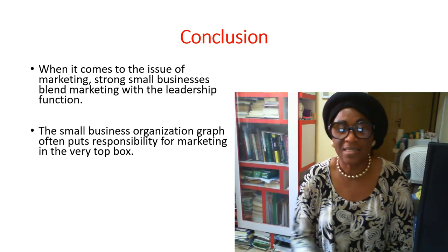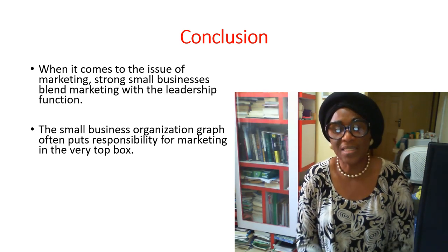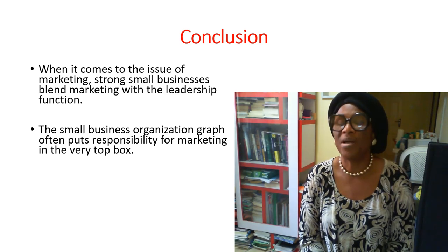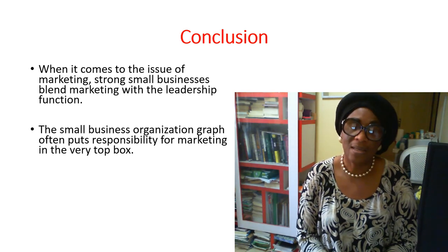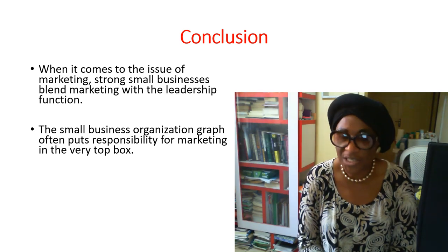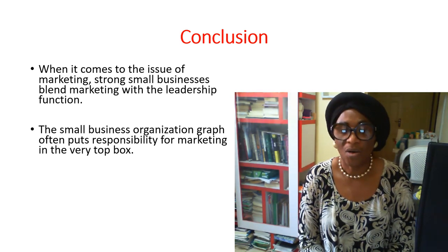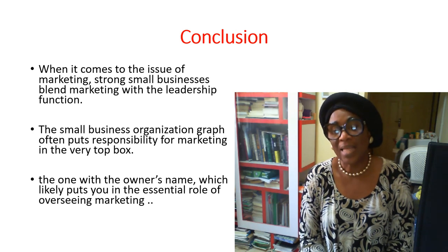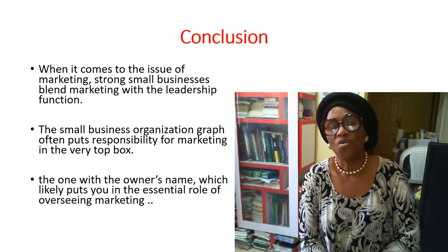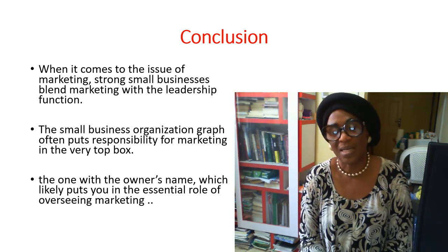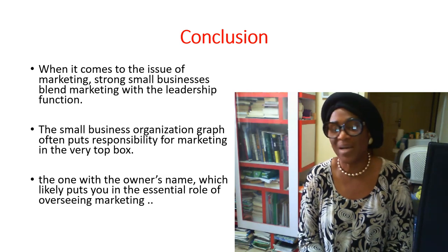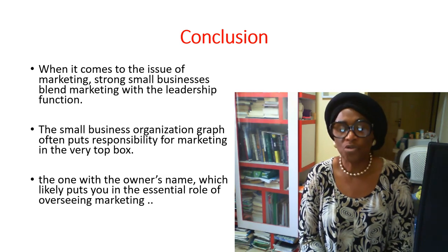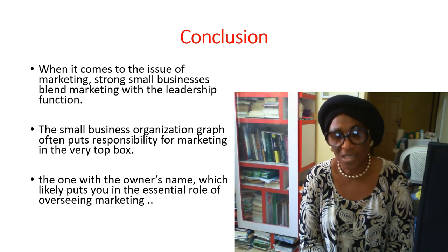The leadership function in the organization becomes a necessity and critical. The small business model puts the owner and entrepreneur at the helm of marketing — he is the major driver. He does all the public relations and leadership in the organization. The business is likely named after the owner, placing him in the essential role of overseeing marketing. Small businesses don't have a marketing department; everything lies solely with the owner, and his name becomes synonymous with the market.